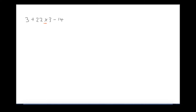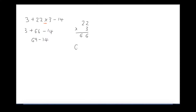So you do 22 multiplied by 3 first. 3 times 2 is 6, 3 times 20 is 60, so that's 66. You rewrite the question with that solved: 3 plus 66 take away 14. Next, addition takes priority over subtraction, so you do 3 plus 66 first, which is 69. Then finally 69 take away 14: 9 take away 4 is 5, 6 take away 1 is 5, so the answer is 55.